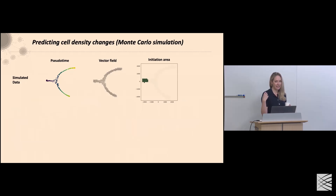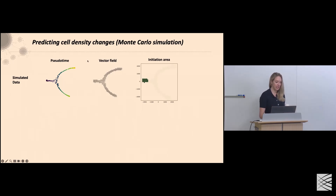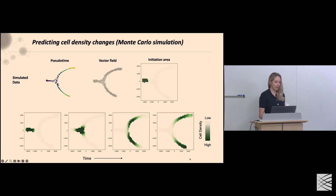To make Cell Oracle as accessible as possible and provide insight into a biological process in an approachable way, we have some simulated data. Here is a progenitor that would bifurcate to two terminally differentiated cell identities. We project our pseudotime gradient as a vector field, place cells in the initiation area in a Monte Carlo simulation, let them differentiate over time, and simulate that cells move down either branch with accumulation of cell density at the end of the process.